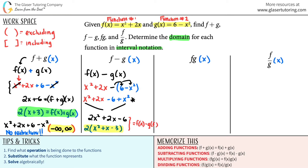For the domain, go back to the original unsimplified expression just in case. This is just a numerator — no denominators, no square roots, all over one. I can plug in any number for x and get a real value, so there are no restrictions. The domain is once again negative infinity to positive infinity with parentheses.